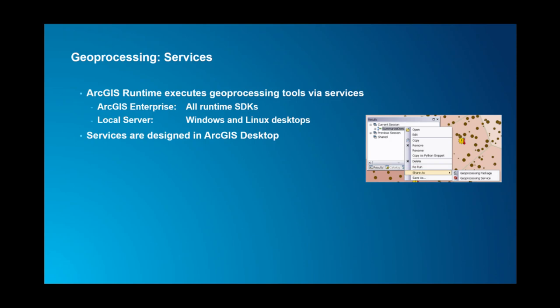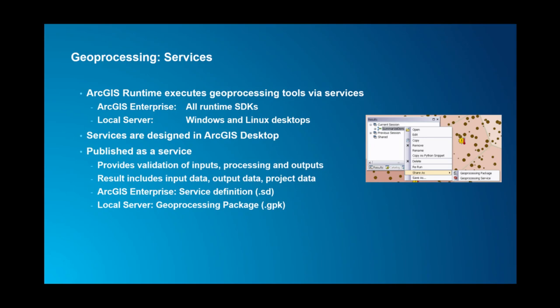You design those services in ArcGIS Desktop. For the ArcGIS Runtime Local Server 100, the current release, you use ArcMap 10.4.1 to design those services using Model Builder and Python scripts. You then publish them as a service. Running the tool first within ArcGIS Desktop performs validation of inputs, processing, and outputs — you need a successful execution of your custom geoprocessing tool within Desktop to be able to publish it. The result includes input data, output data, and any project data accessed, all bundled into a service definition or geoprocessing package.